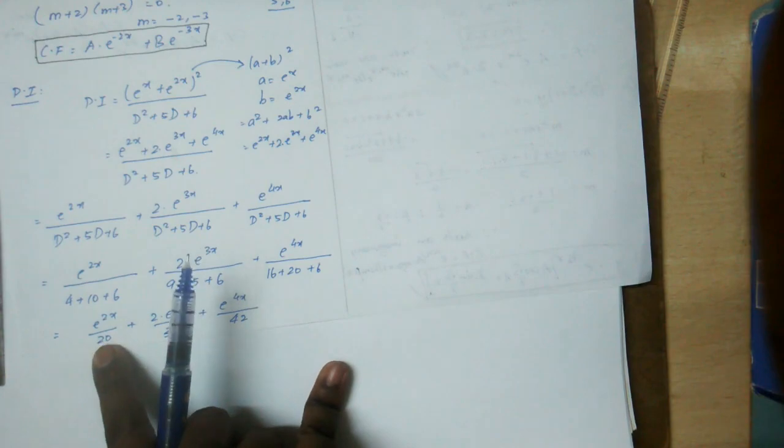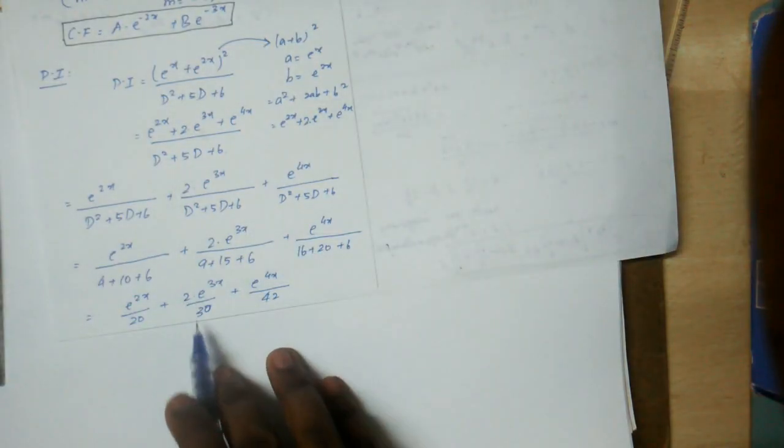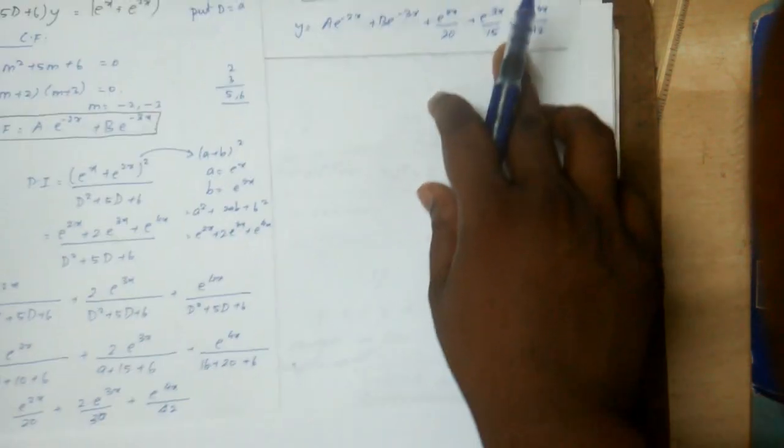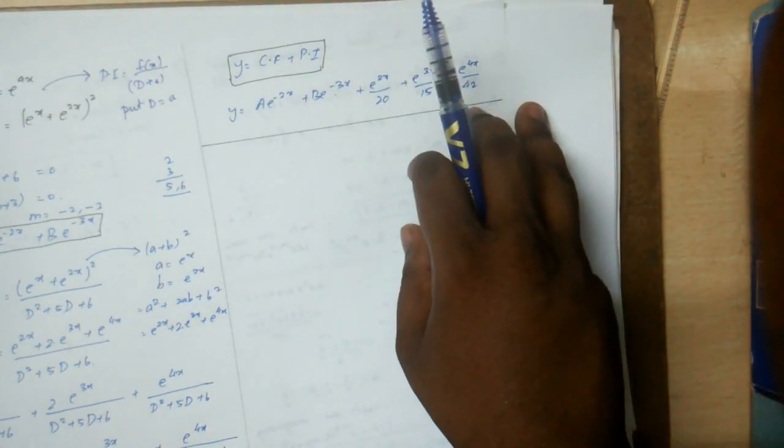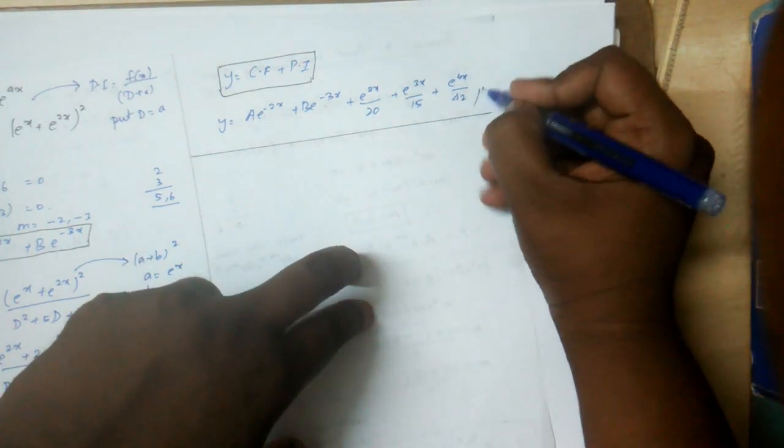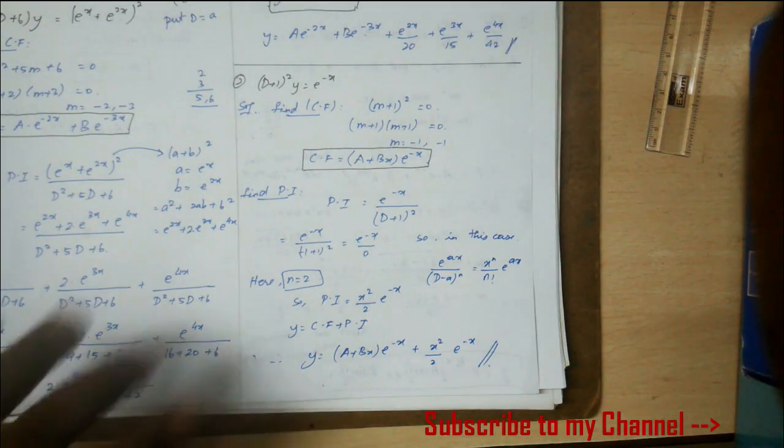The PI gives e^(2x), e^(3x), e^(4x) terms with coefficients 1/20, 1/15, etc. After simplification, this is your final answer for the first problem.